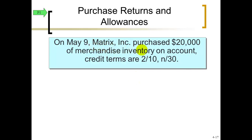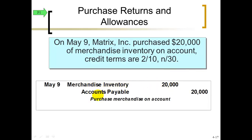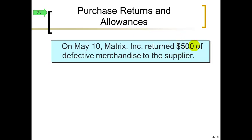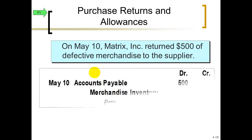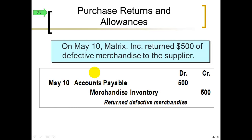Example: our company Matrix bought $20,000 of merchandise inventory with terms 2/10, net 30. We debit merchandise inventory and credit accounts payable for the full $20,000. But then we discover $500 of that merchandise was defective. We call the seller and ask permission to return it. Here's the journal entry for the return: debit accounts payable $500 (reducing the liability) and credit merchandise inventory $500 (reducing the asset) for the cost of the returned item.